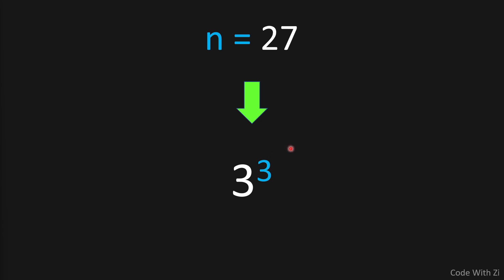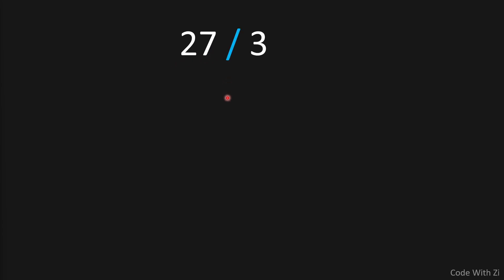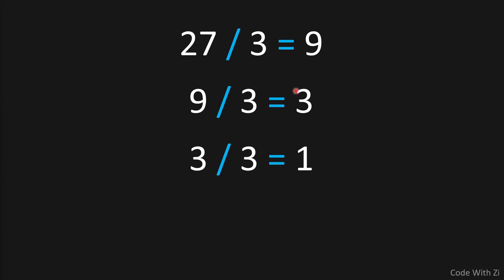Let's see what a number being a power of three means. If we divide 27 by three, we get nine. If we divide nine by three, we get three. And if we divide three by three, we get one. So if we divide a number by three multiple times and reach one, that means that number is a power of three. But each time we divide, we check if it is divisible by three.